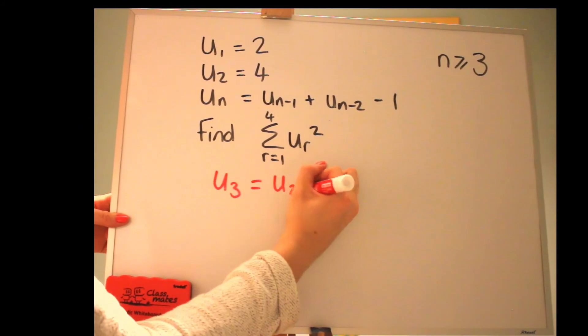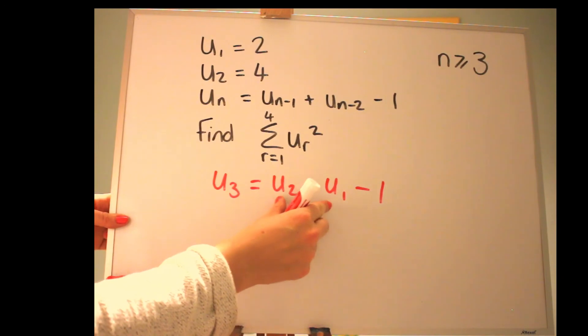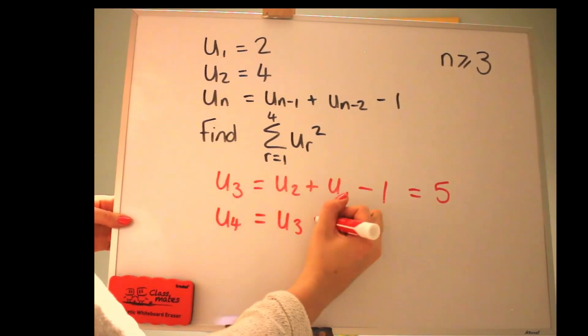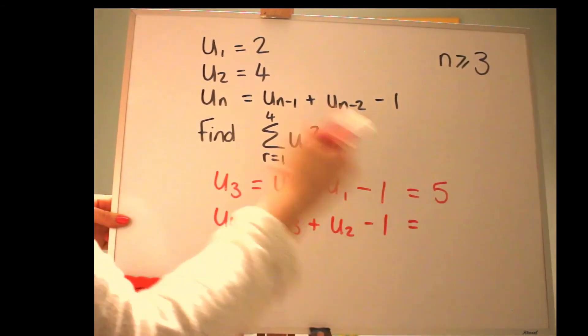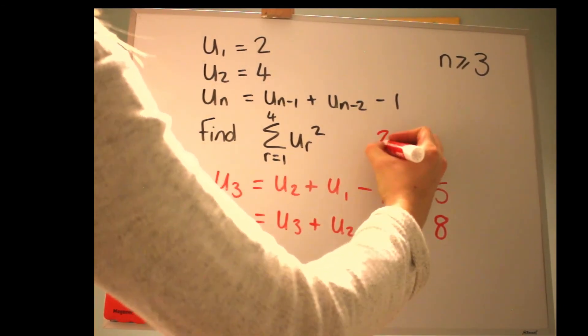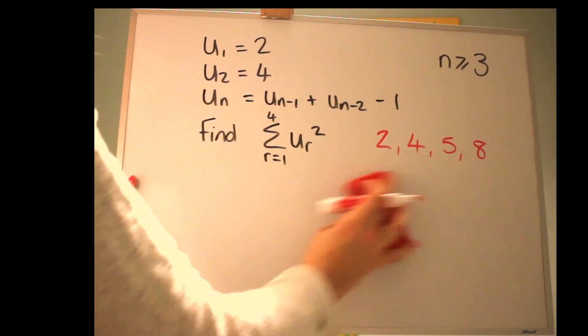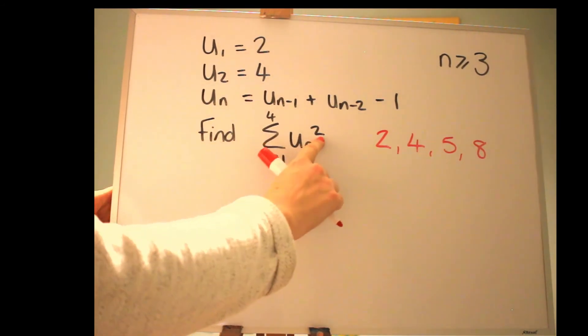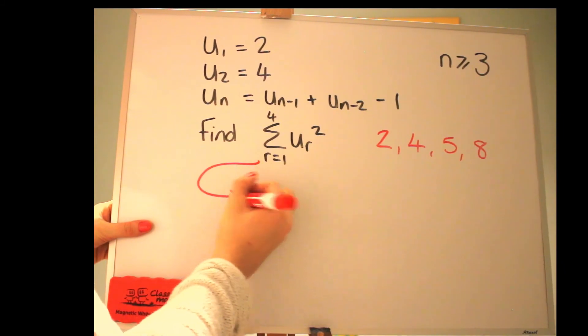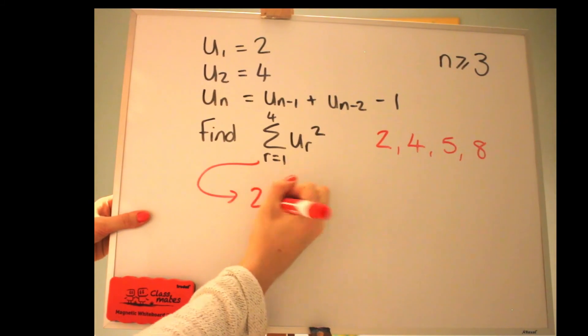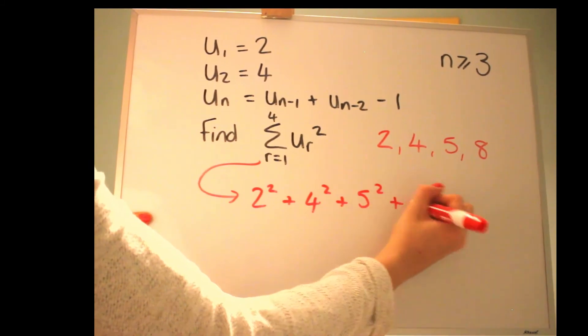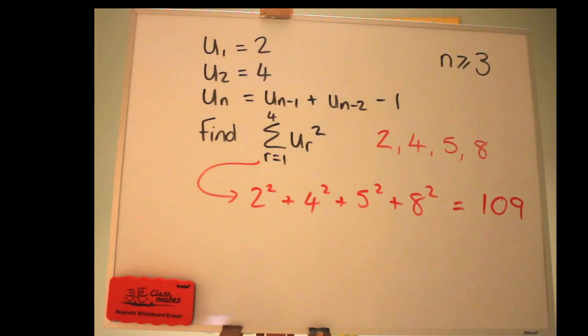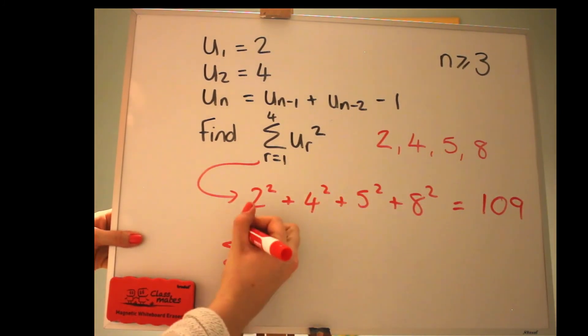So let's start with finding u3. So that's using the previous two terms, adding together and then taking off one. So we've got those, that's 4 and 2. Taking off one we get 5. And then u4 would be the previous two. And take off one, so that would be 5 and 4. Take off one you get 8. I'll just write the sequence up here so we've got more space. And now we can finish the question. So we're asked for the sum again using sigma 1 to 4. This time I put in a squared just to make it more exciting. So we can work that out. This means to square them all and add them up. So we're going to be doing 2 squared plus 4 squared and so on. My calculator tells me that is 109.